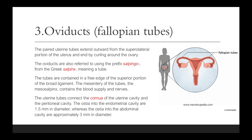The third structure is the oviduct, or what we call the fallopian tubes — a paired uterine tube. It originates from both cornua of the uterus and extends outward from the superolateral portion of the uterus, ending by curling around the ovary. The oviducts are also referred to using the prefix salpingo, from the Greek word salpinx, meaning a tube. The tubes are contained in the free edge of the superior portion of the broad ligament, and the mesentery of the tubes — the mesosalpinx — contains the blood supply and nerves.